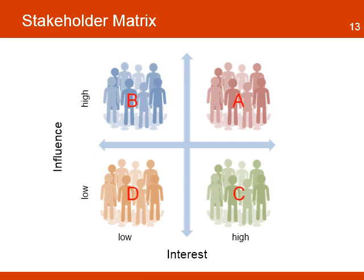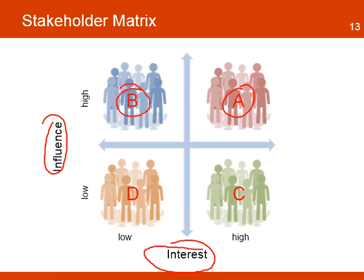A tool used to identify and classify stakeholders is the stakeholder matrix. The matrix identifies stakeholders based on their level of interest and their level of influence. A stakeholder with a high level of influence and a high level of interest will be in group A — for example, the project owner. A stakeholder with high levels of influence but low levels of interest will be in group B. A stakeholder with high interest but low influence will be in group C. Group D is for those stakeholders with low influence and low interest.